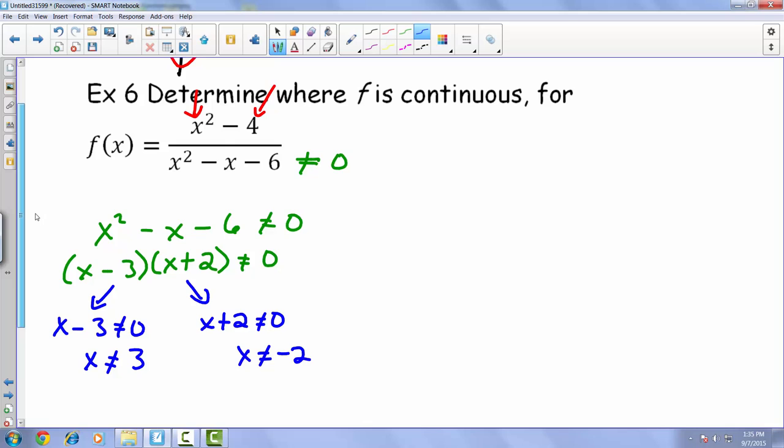Now, we have found pretty much where we would see that 0 on the bottom by solving for those. And as a result, this overall entire function would be continuous everywhere except for 3 and negative 2.